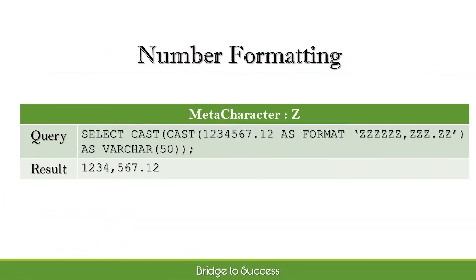MetaCharacter Z displays formatted decimal digits with no extra zeros at the starting position. In the example, even though 9 digits of the Z MetaCharacter are used in the format and only 7 digits before the decimal point are present in the source number, therefore 7 digits before the decimal point are present in the output.